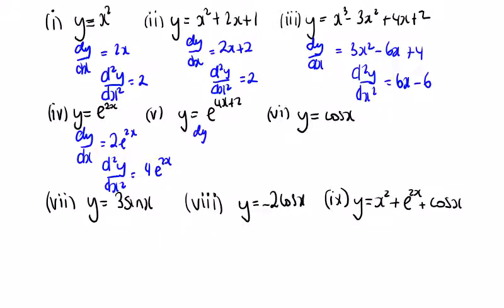Number 5: dy dx is going to be e to the power of 2x plus 2 times 4e to the power of 4x plus 2, and d squared y dx squared is equal to the same thing again multiplied by 4, so we're going to get 16e to the power of 4x plus 2.